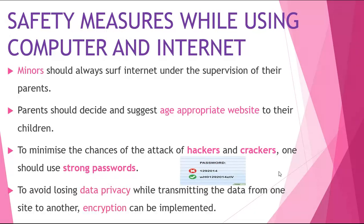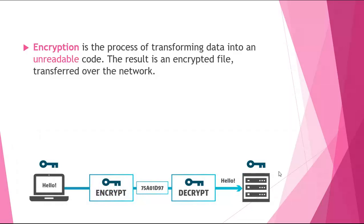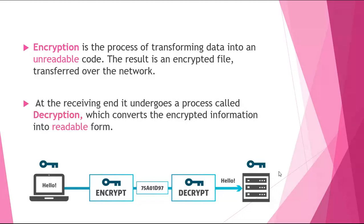To avoid losing data privacy while transmitting data from one site to another, encryption can be implemented. Encryption is the process of transforming data into an unreadable code. The result is an encrypted file transferred over the network. At the receiving end, it undergoes a process called decryption, which converts the encrypted information back into readable form.